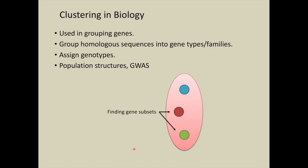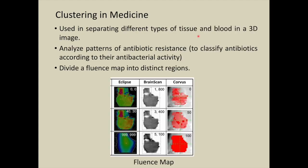Let us see some more examples of clustering. Such as in biology, we can use to group gene homologous sequences into gene types, assign genotypes, and so on. Clustering can also be done in medicine where clustering can be used in separating different types of tissue and blood in a 3D image, analyze patterns of antibiotic resistance, divide a fluence map into distinct regions.